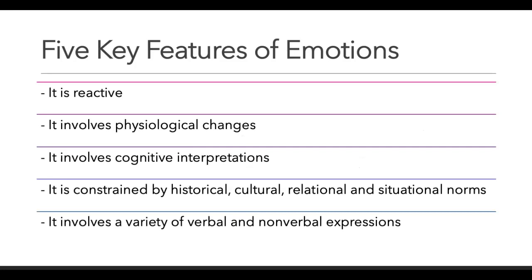Here are the five key features of emotions. Number one is that it is reactive. By saying that it is reactive, we understand that our emotions respond to something that happened outside of us. For instance, if we receive bad news or negative news, then we would feel sad or we would feel anger, so there is that sort of specific emotion washing through us.